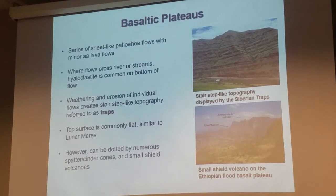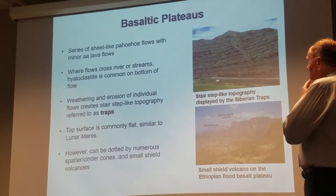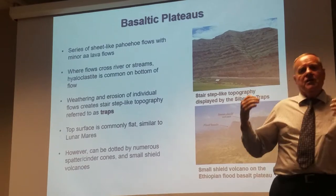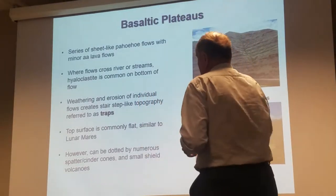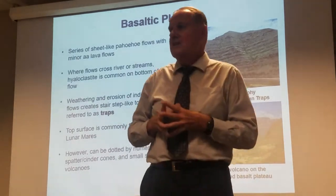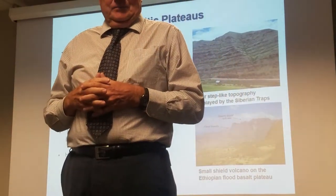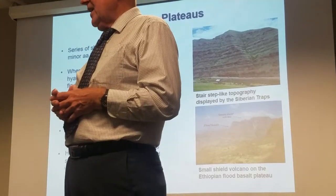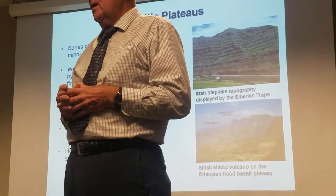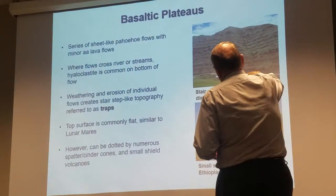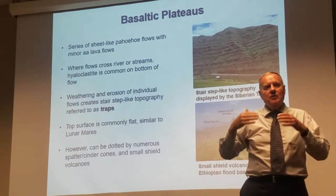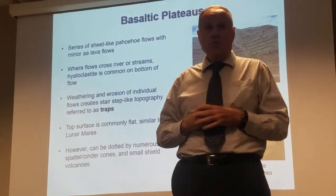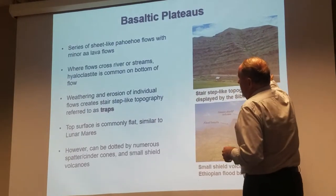A whole series of pahoehoe and occasionally aa lava sheet flows. When lava comes in contact with water, it creates a material called hyaloclastite. Remember from Petrology — 'hyalo' means glass, and 'clastite' means fragments, so it's basically fragmented basaltic glass. You'll see that buried sometimes in the bottoms of the lava flows, indicating that the flow probably traveled over some type of water — a standing freshwater lake, river, or stream. So those are common on the bottom of these flows.